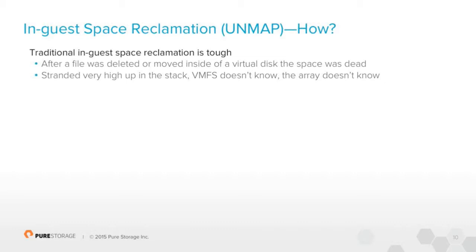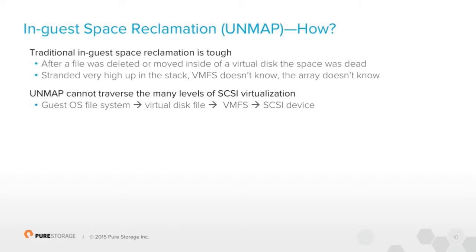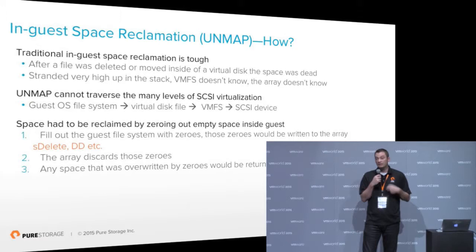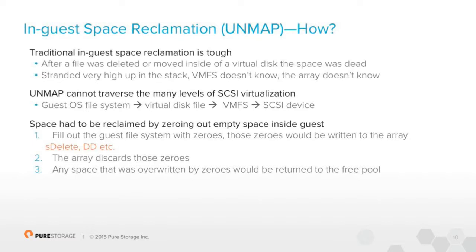So in-guest space reclamation — what's going on with this? Traditionally when you had to reclaim space, you had to do things like overwrite dead space with zeros and send it down to the array, because often arrays have the ability to run zero reclamation procedures on volumes or remove contiguous zeros. Many flash data reduction arrays today, when they receive zeros, just discard them immediately. That was a way to reclaim space without unmap support, and it's been done for a very long time. People would write zeros with things like sdelete or dd, depending on the operating system. But of course this is a manual process, requiring a lot of coordination between the guest, the application owner, the VMware owner, and possibly even the storage admin.